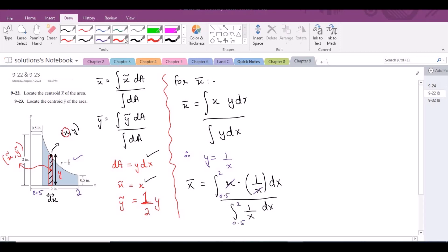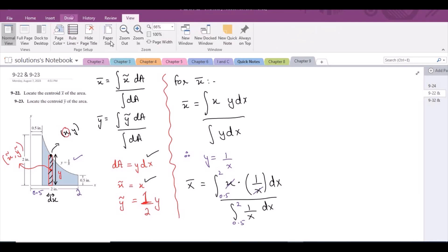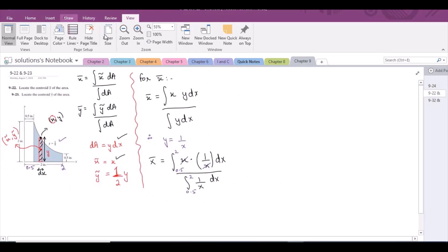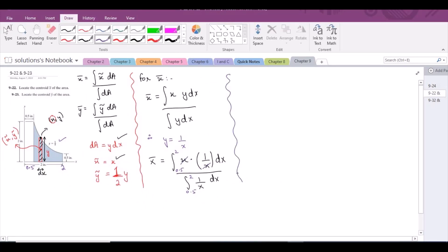Now on further simplifications, our x bar becomes x bar equals integral 2 to 0.5 dx divided by integral 1 upon x dx from 2 to 0.5. Now we know that from the rules of integration, the numerator could be solved by the polynomial rule or the power rule.